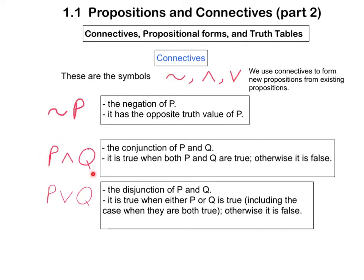Now, this proposition is known as the conjunction of P and Q, and it's true precisely when both P and Q are true. Otherwise, it is false. There are four possible states of true or false that both P and Q can be in. The conjunction is false in three out of four of those possible states, and so it is more often false than true.